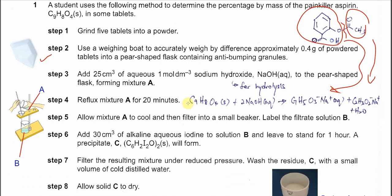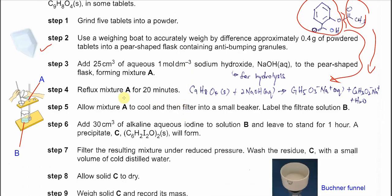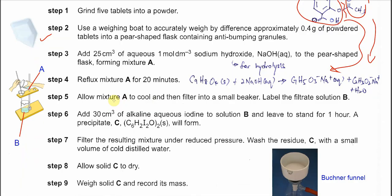Step 5, once mixture A undergoes reflux for 20 minutes, allow the mixture A to cool, and after that we filter this mixture A into a small beaker. We just pour the A into this funnel, of course the funnel with the filter paper. This is a simple filtration that we can do in the lab. The filtrate now we label as solution B.